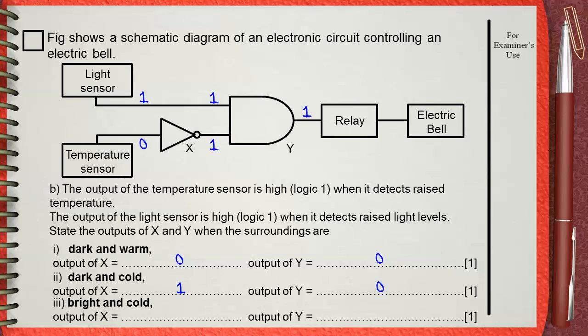The answer will be, output of X, the NOT gate, will be one. Output of Y, the AND gate, will also be one.